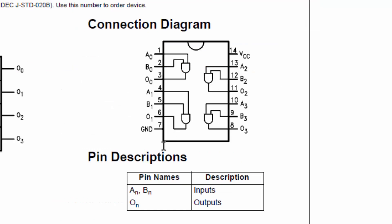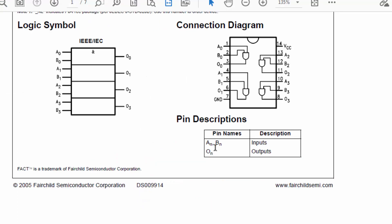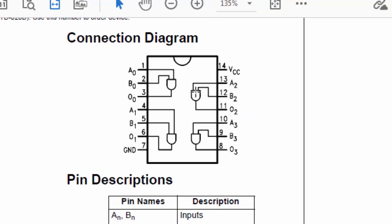74AC08, it is a 14-pin IC. Pin number 14 is VCC, pin number 7 is ground. It is a TTL IC, transistor-transistor logic, and it has dot function, it has multiply function. This IC has four gates inside: one, two, three, four.